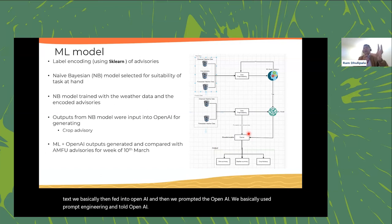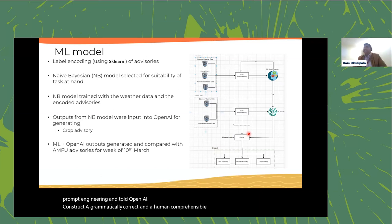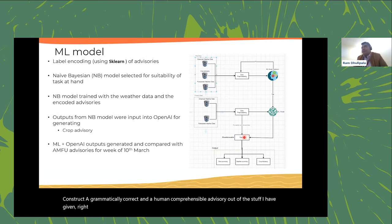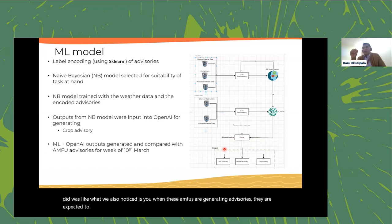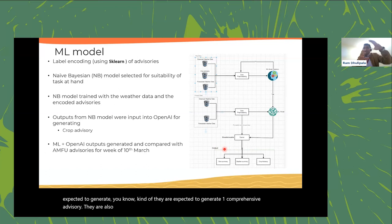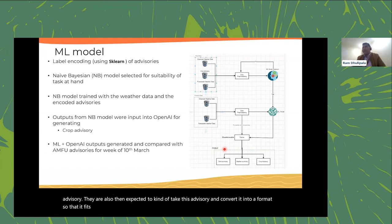In April or May 2023, we tested the Naive Bayes model: we input the observed weather for the previous week plus the forecast for the following week. The output was an incoherent set of keywords. We then fed that incoherent output into OpenAI with a prompt engineering instruction: 'Construct a grammatically correct and human-comprehensible advisory from the keywords I have given you.' The results were very promising.